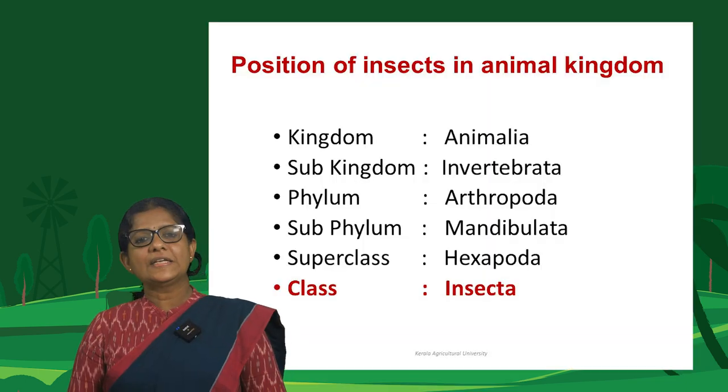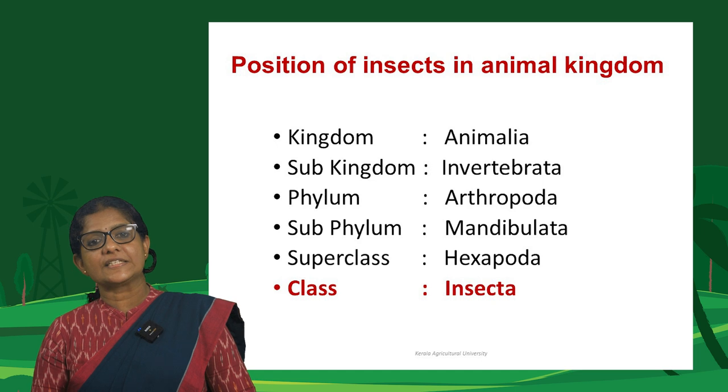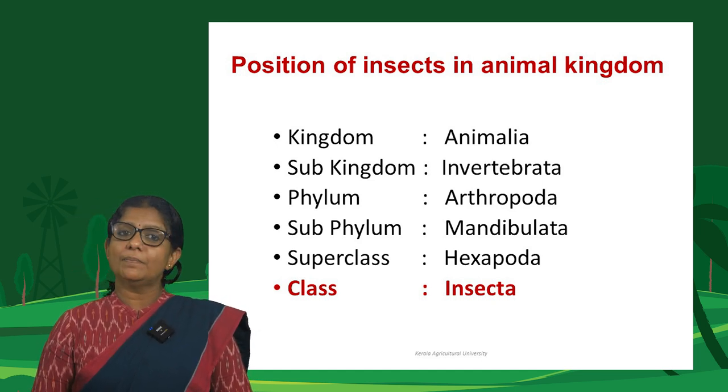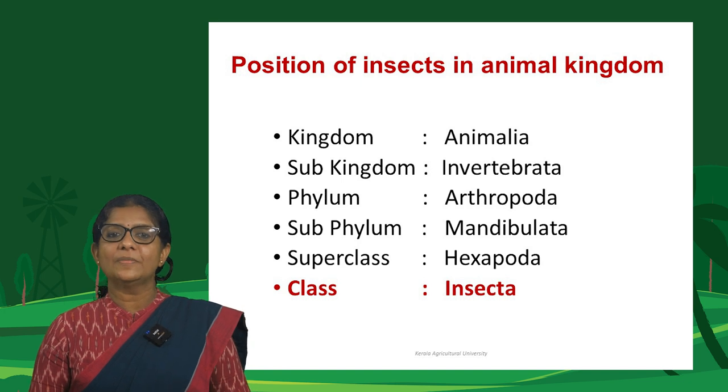In this lecture on insect classification, we will discuss briefly the history of insect classification, and in detail the modern classification of insects, covering the Christensen system of classification and the revised classification proposed by Gullan, Cranston, Bernard, and Parsons. In the animal kingdom, insects belong to class Insecta of the superclass Hexapoda, in the subphylum Mandibulata of the phylum Arthropoda.